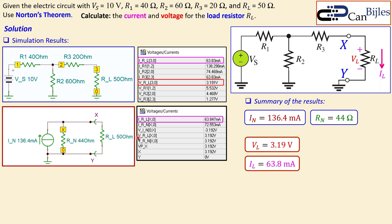The simulated V_RL is also 3.19 volts, confirming that the Norton equivalent circuit gives exactly the same results as the original circuit in the simulator and as calculated. Let's now also generate these results in the SPICE simulator and show how to produce these tables — jumping to SPICE now.